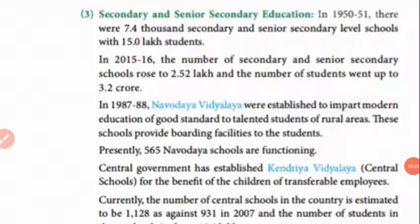Next is senior secondary education. In 1951, there were 7,400 students, and at the secondary school level there were 15 lakh students. In 2015-16, the number of senior secondary students rose to 2.52 lakh and the total number of students went up to 3.2 crore.